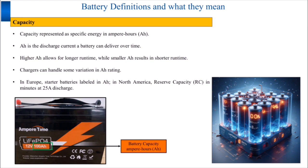Next is battery capacity. Battery capacity is typically measured in specific energy, represented as ampere-hours, written in short as Ah. This signifies the discharge current a battery can provide over time.